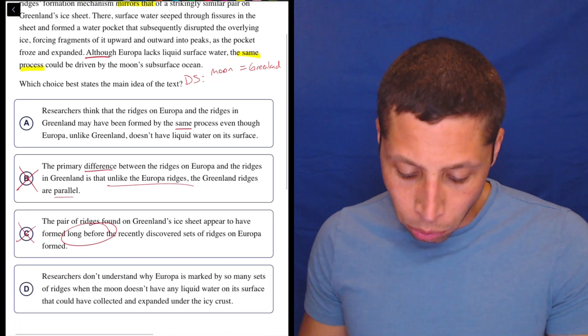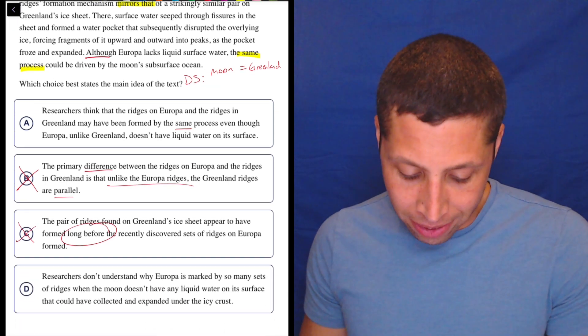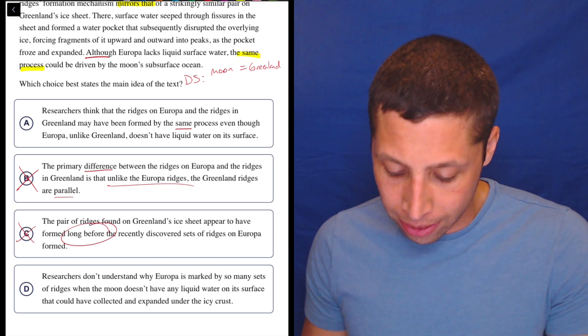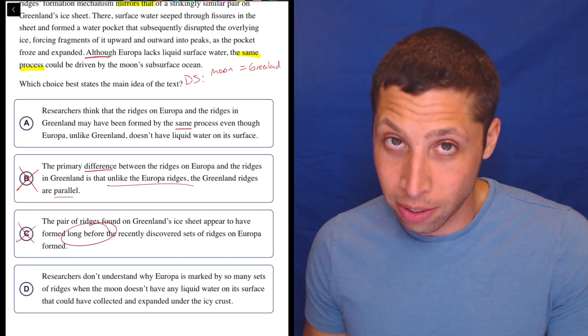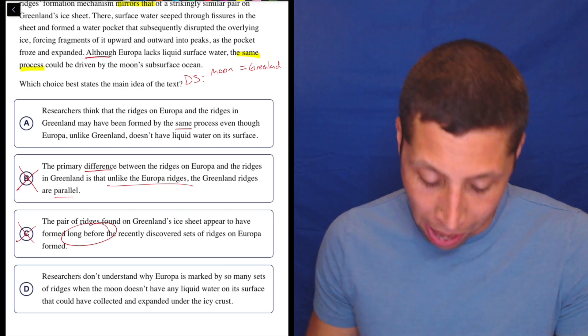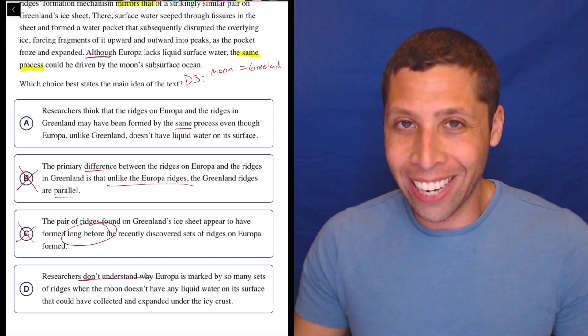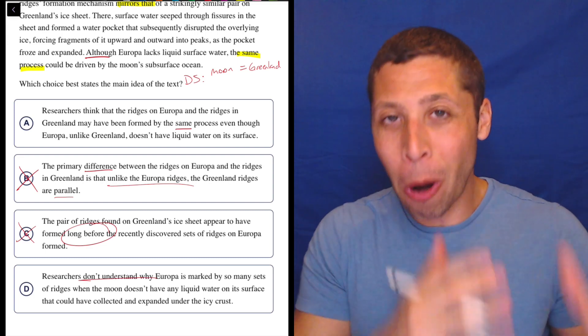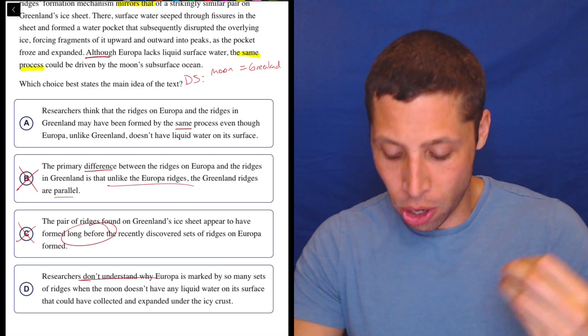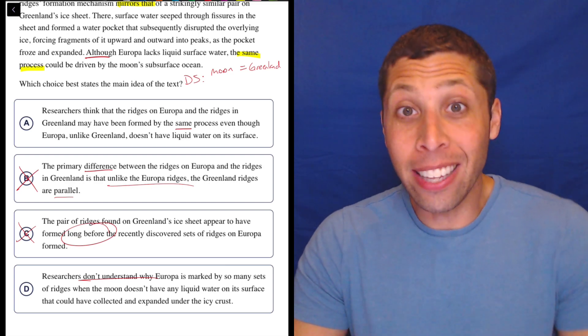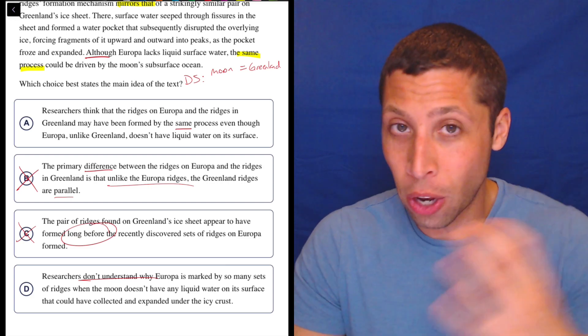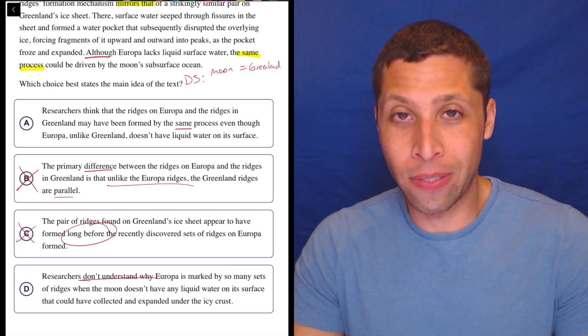Researchers don't understand why Europa is marked by so many sets of ridges when the moon doesn't have any liquid water on its surface that could have collected and expanded under the icy crust. Well, that seems to be completely leaving out Greenland, which was a big part of this passage. But the whole point is that they are saying Europa is like Greenland. So maybe that is the theory. It's not that they don't know or don't understand. They at least have a theory. Maybe that theory is wrong, but they still have a theory of what's going on. So this is just completely wrong.